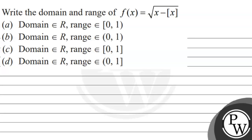Hello, let's see the question. The question says: write the domain and range of f(x) which is equal to square root of x minus greatest integer function of x.